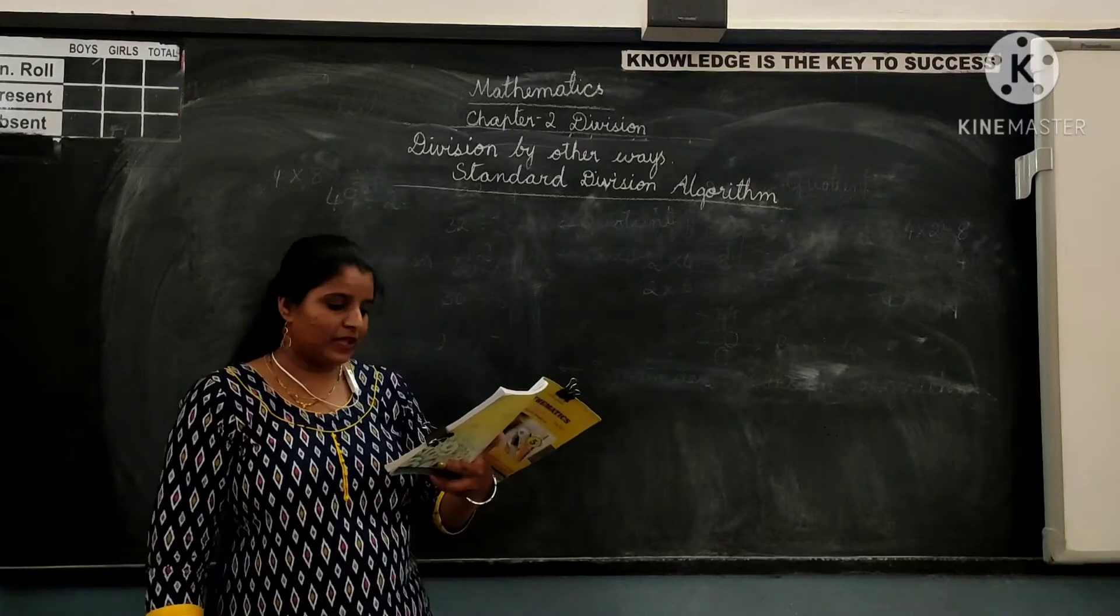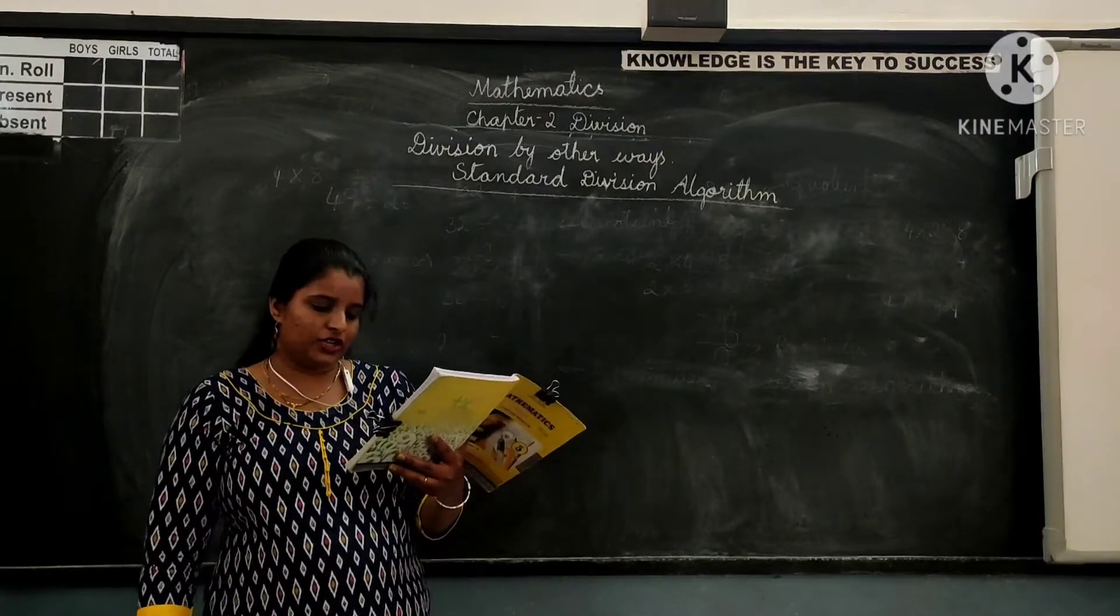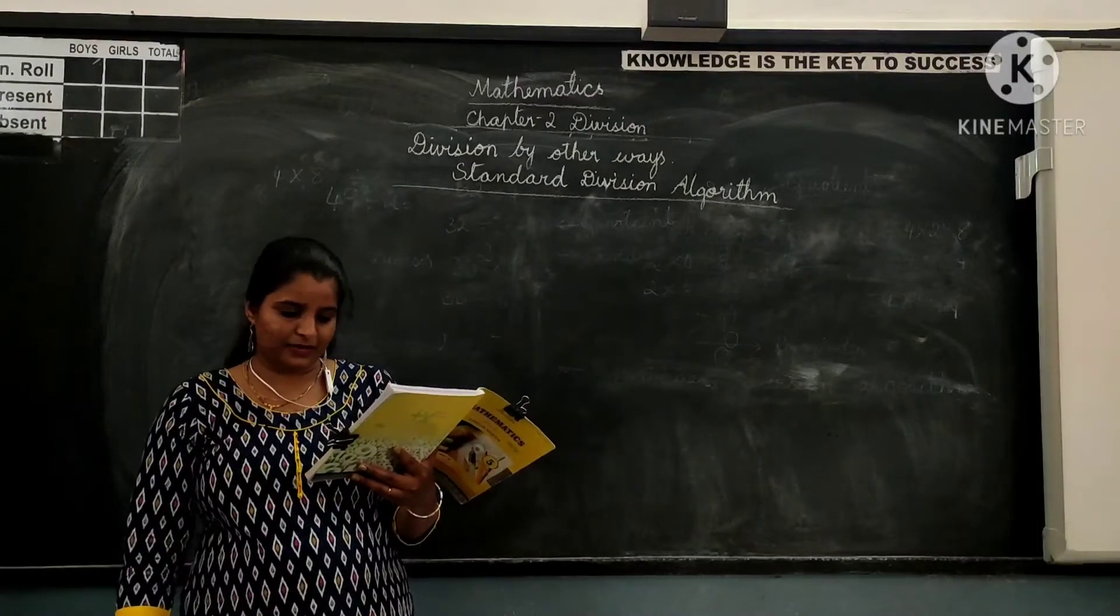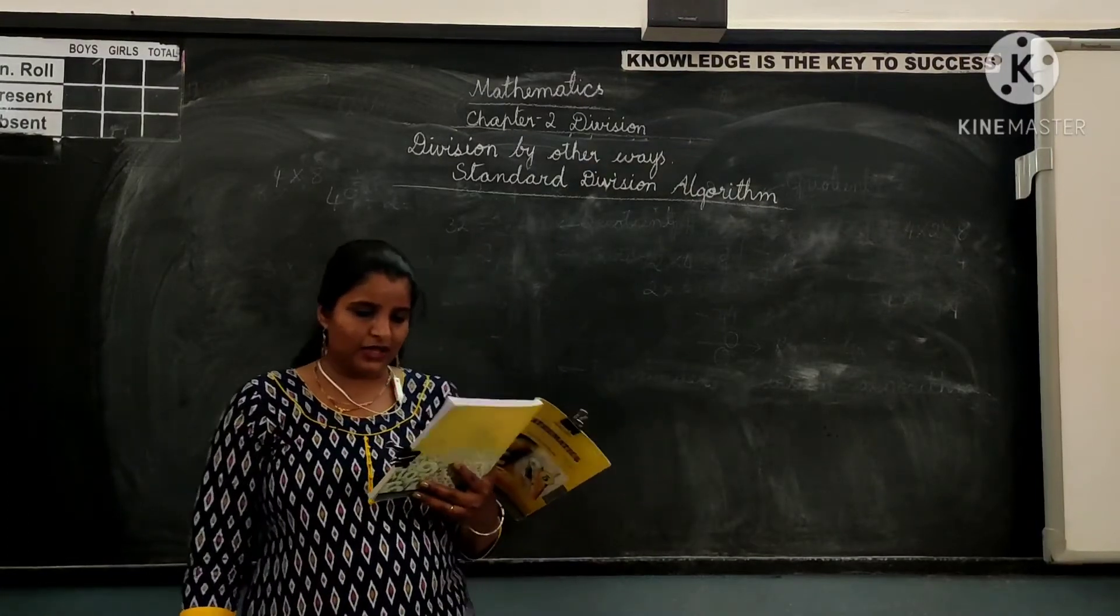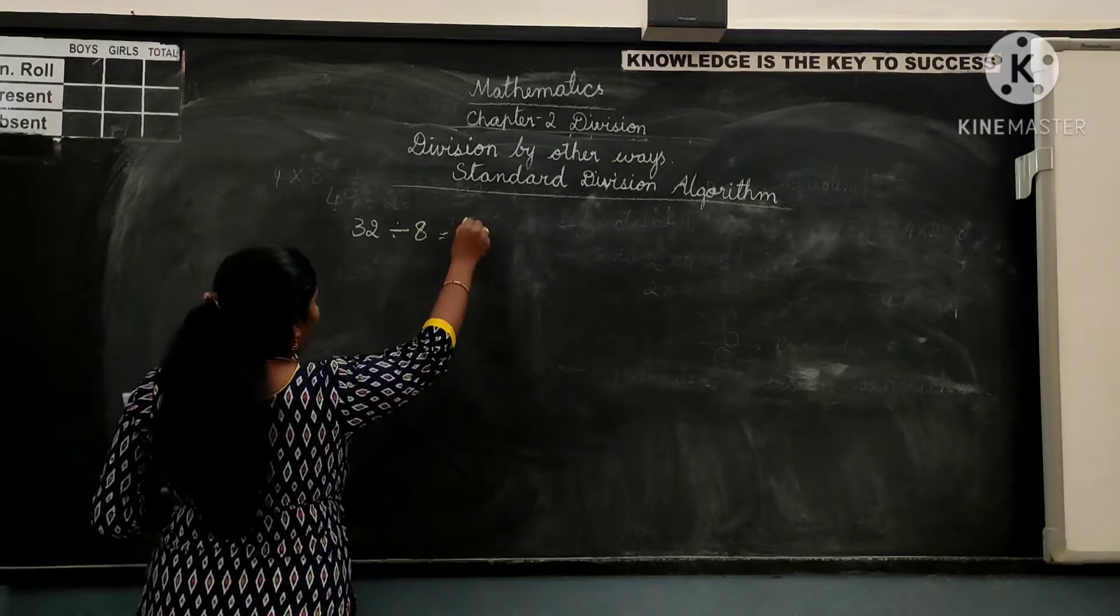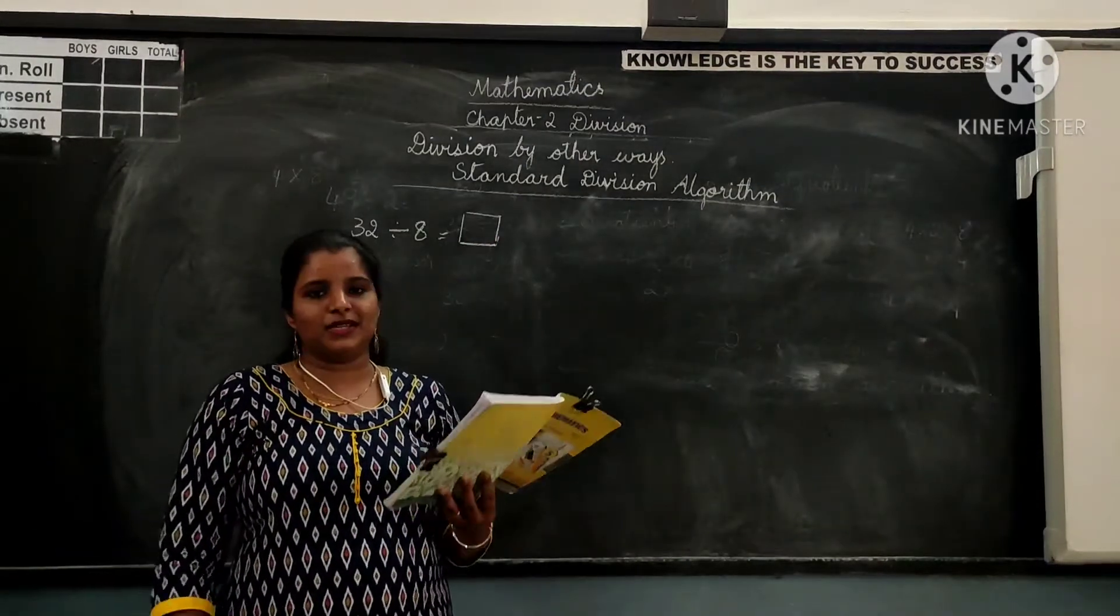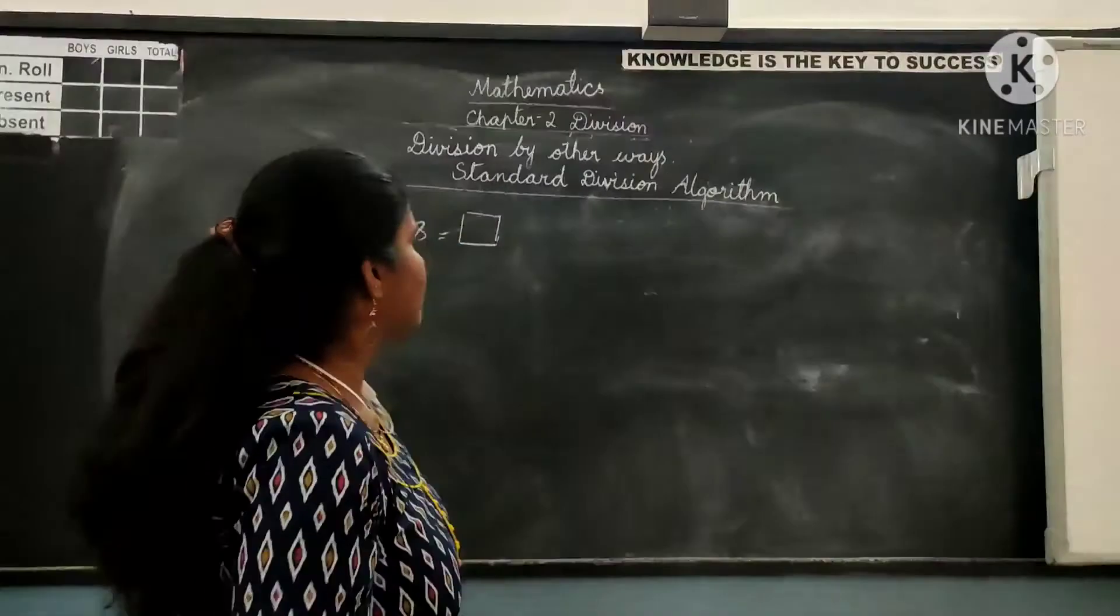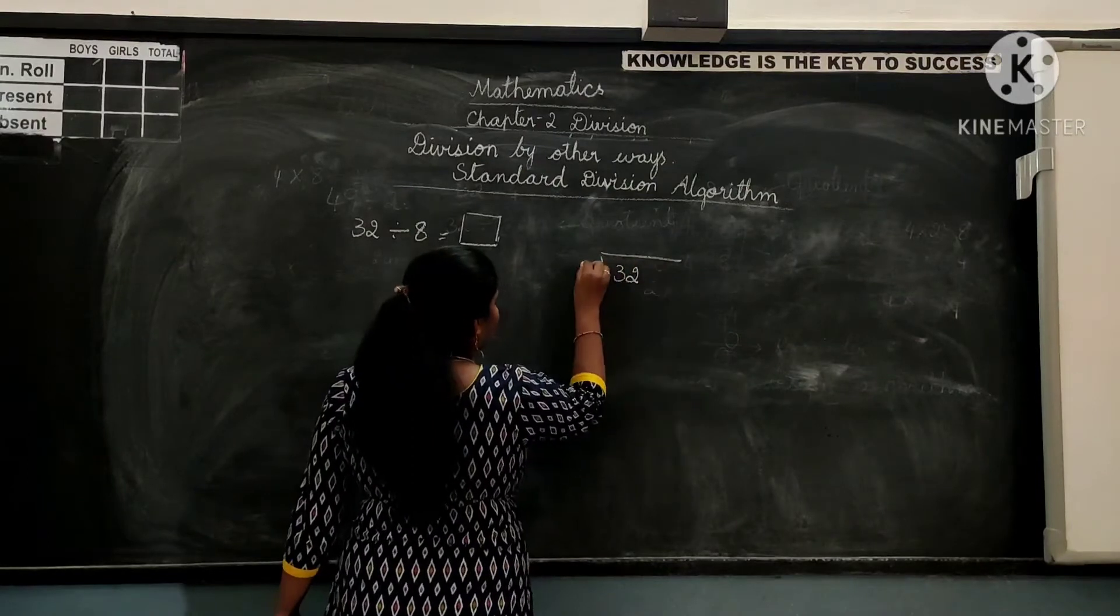So let us see some more examples. Example 3. Shri Mataji also has a chocolate box with 32 pieces. He wanted to share equally among his 8 friends. How many pieces does each friend get? So here 32 becomes the dividend and 8 is the divisor. The quotient will give you the answer. Let us solve this through standard division algorithm.